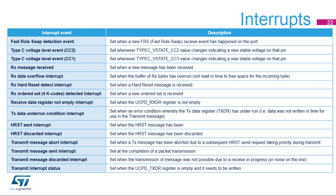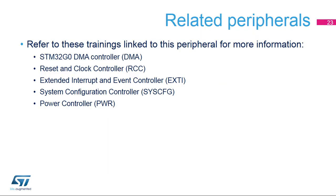When an interrupt from the UCPD is received, the software must determine the source by reading the UCPD_SR register. Depending on which bit is set to 1, the interrupt service routine should handle that condition and clear the bit by writing to the appropriate bit in the UCPD_ICR register. This slide summarizes all events detected by the UCPD module that can cause interrupt requests. For more information, please refer to the training linked to this peripheral: STM32G0 DMA controller, reset and clock controller, extended interrupts and events controller, system configuration controller, and power controller.